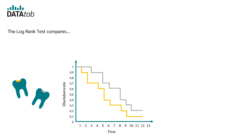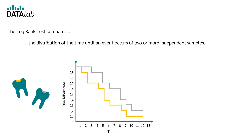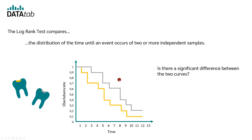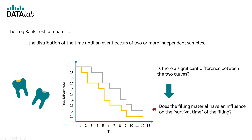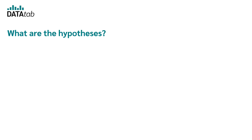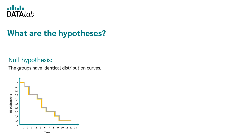The log rank test compares the distribution of the time until an event occurs across two or more independent samples. For example, you might be interested in whether there is a difference in survival time between two different materials. In half of the participants you use material A, and in the other half you use material B. The log rank test gives you an answer to the question: is there a significant difference between the two curves? In a log rank test, the null hypothesis is that there is no difference in terms of the distribution of time until the event occurs.